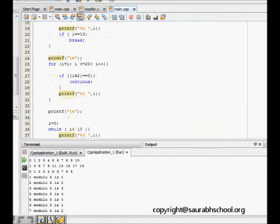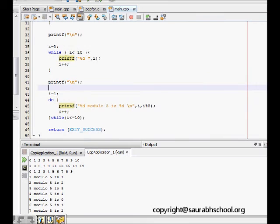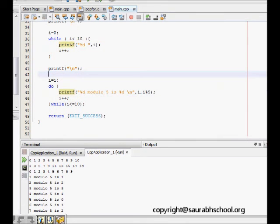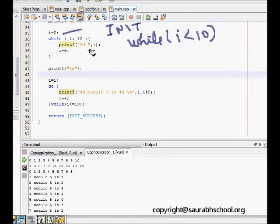Now we will look at other loops, the while loop. In while loop, we do the initialization beforehand. Then while there is some condition test, while i is less than 10, we do printf percentage di.